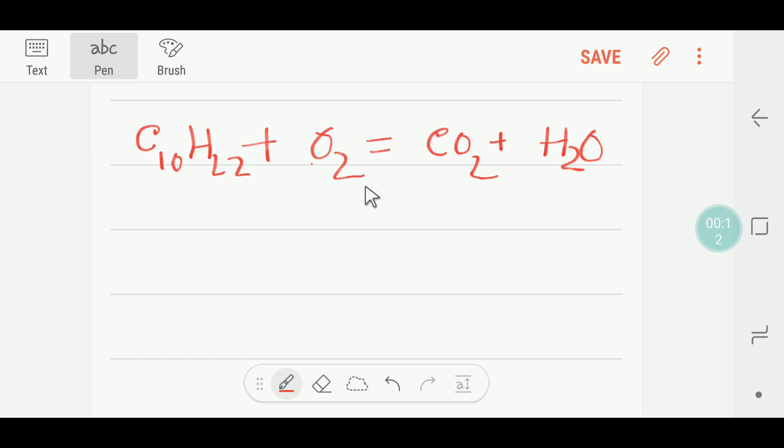This is the general formula of an alkane. If you put 10 here, then you will get C₁₀H₂₀ plus two, so 22 hydrogen.